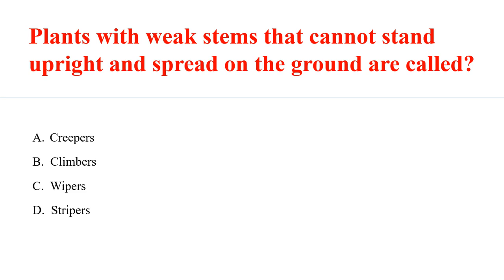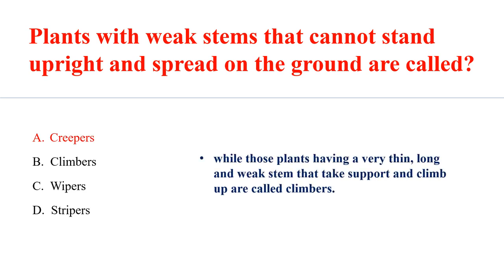Plants with weak stems that cannot stand upright and spread on the ground are called creepers, while plants having very thin, long, and weak stems that take support and climb up are called climbers.